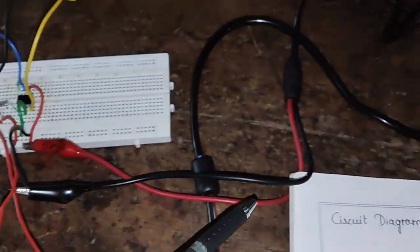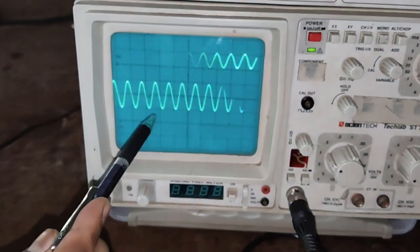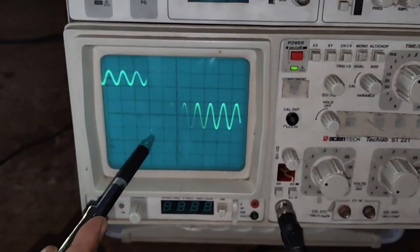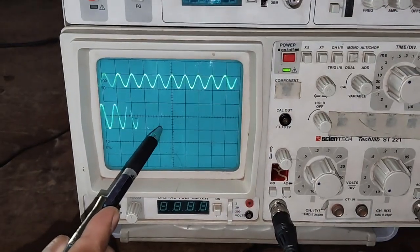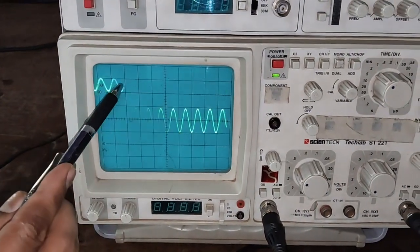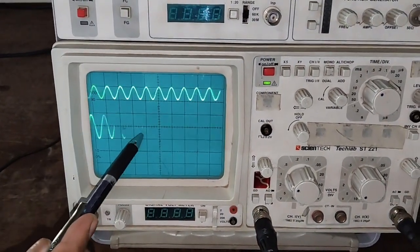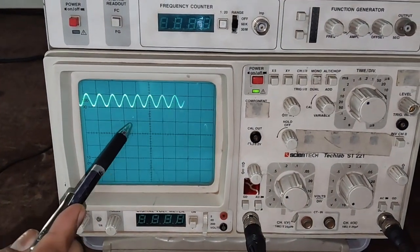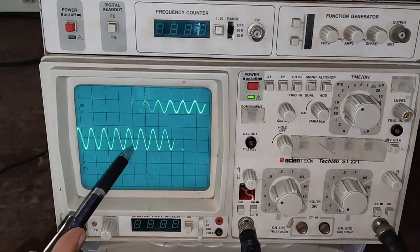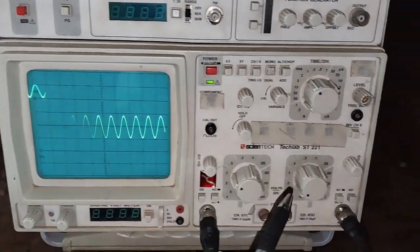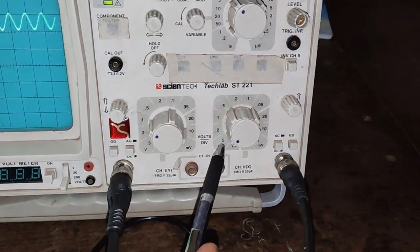Now we will observe its output. Here in CRO, we can see that the amplified waveform at the output pin. This is 1 volt. And at the output, we are almost getting the 10 volt. It is having 2 divisions into 5, that is 10 volt.